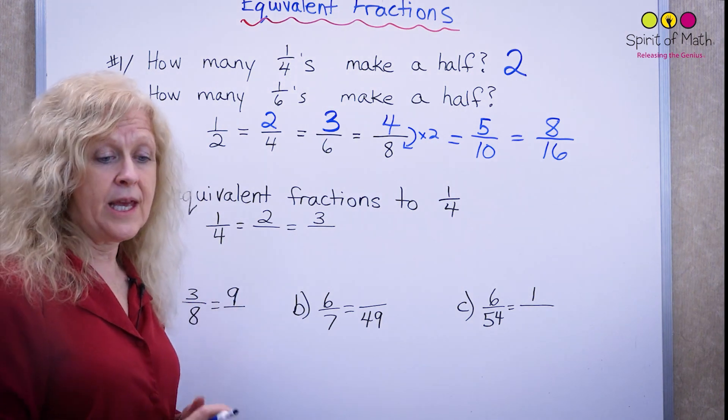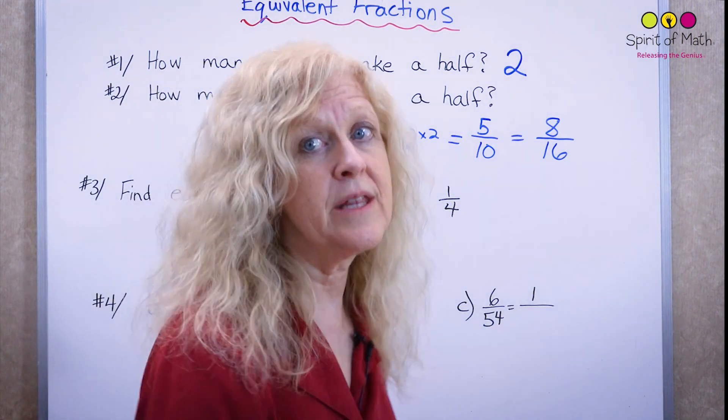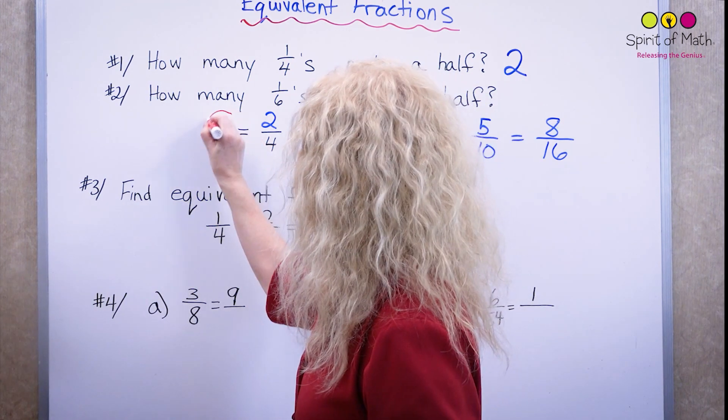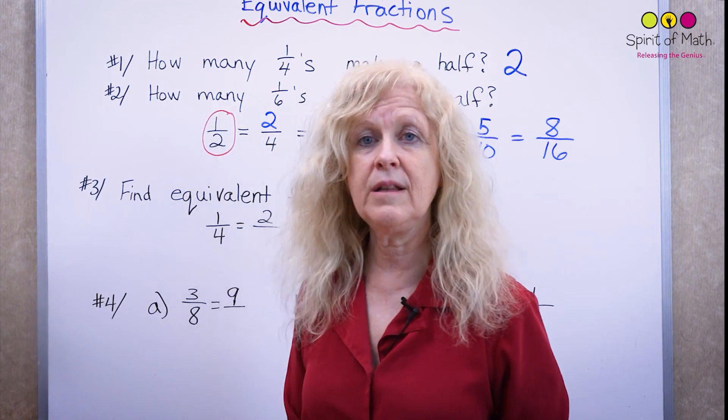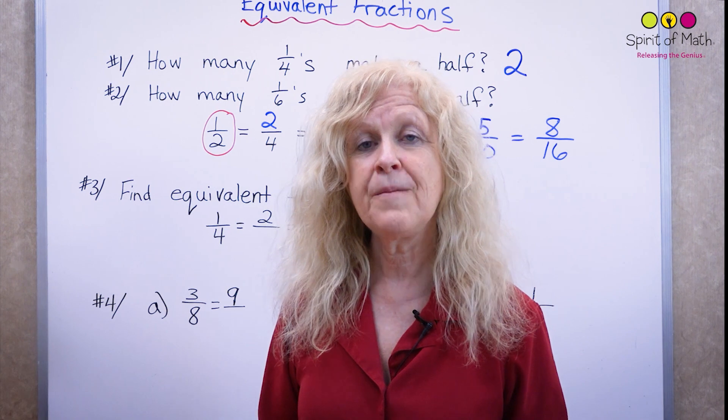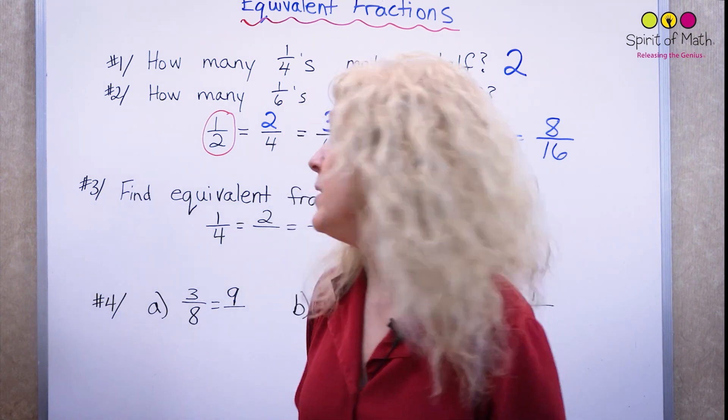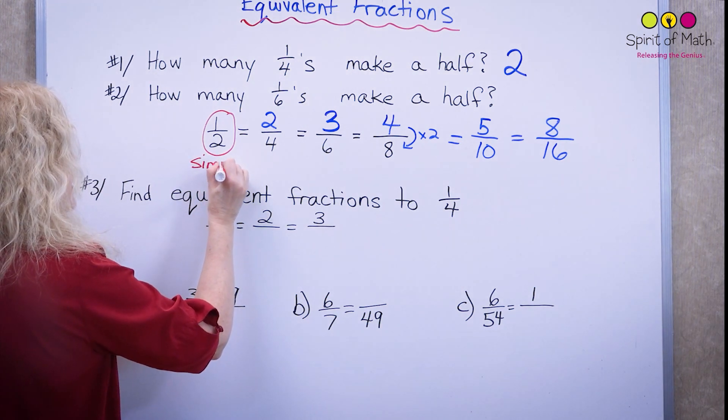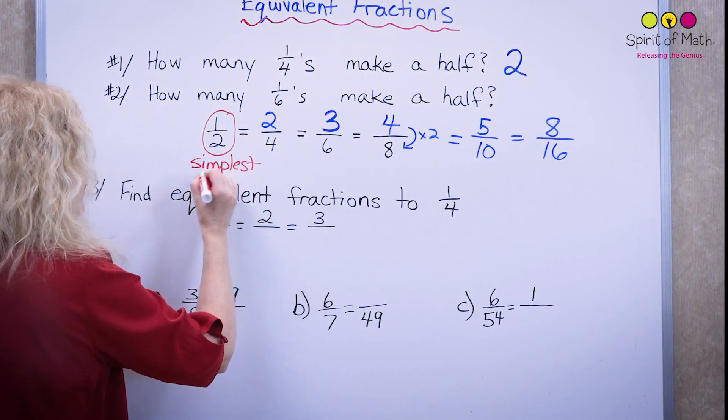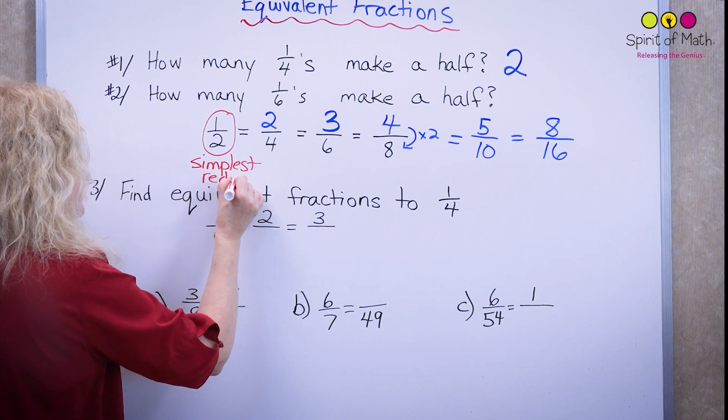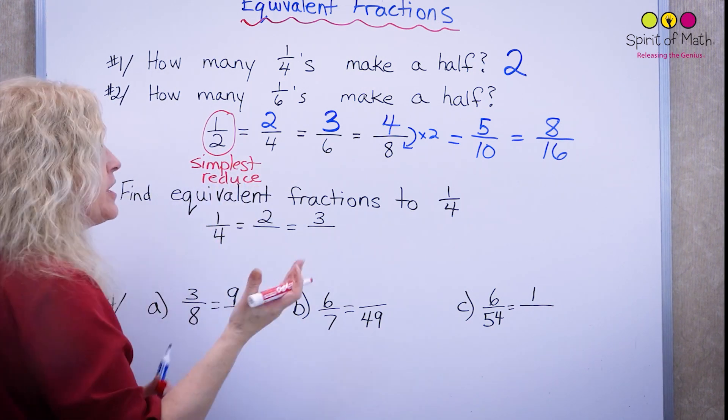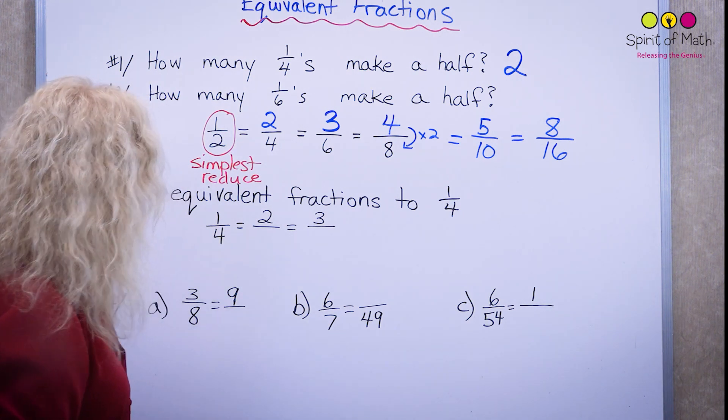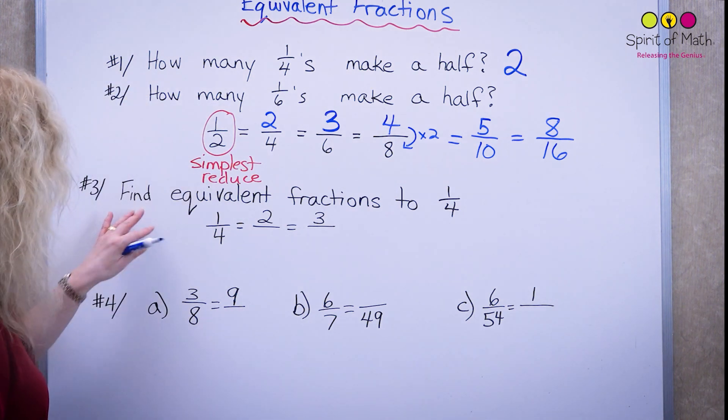Now, the thing that you have to remember too is that the very first number here, the one that you can't break down any little bit more is called the simplest form or the reduced form. So I'm going to write both those words there, simplest form or reduced form, because you can't reduce the fraction to any smaller numbers. So therefore, it is the simplest.